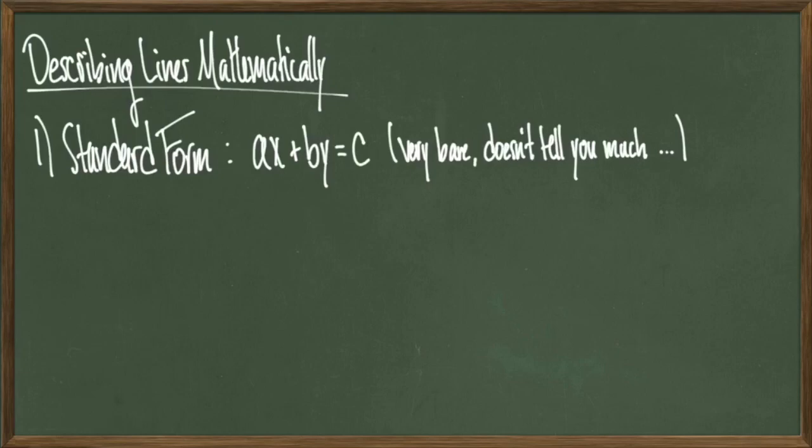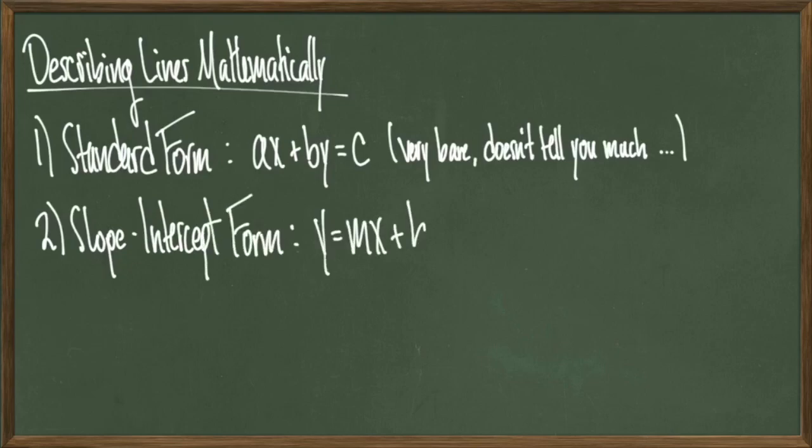Which is kind of disappointing because I just said that the two characteristics of a line that we need are its slope and its y-intercept. So let's fix that. Starting from a standard form of a line, we can actually solve for y in this equation, and this will get us something called slope-intercept form, which looks like y equals mx plus b. Now this is a much better way of writing a line because we can look at it and start reading off the information. The coefficient of our variable x, denoted by m, will be the slope of our line.